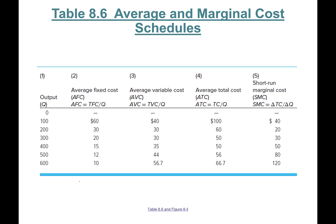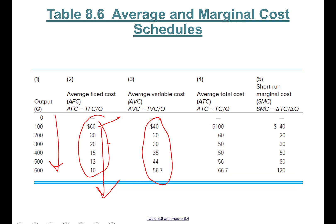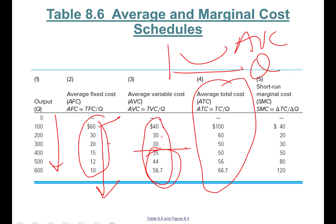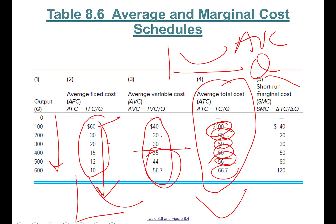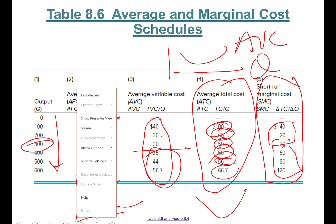We're back. Average fixed cost starts at $60 and keeps declining. Average variable cost first goes down — $40, $30, $30 — then picks up, confirming its U-shape. Average total cost goes $100, $60, $50, $50 then starts rising — also U-shaped. Marginal cost also has a U-shape, starting at $40, dropping to $20, then picking up at the 300 level.